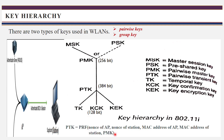For this message, you apply the pseudo random function and the output you get is taken as the PTK — pairwise transient key. This pairwise transient key further derives three different keys. Those are: TK (temporal key), KCK (key confirmation key), and KEK (key encryption key). These are three keys each of length 128 bits, derived from PTK.